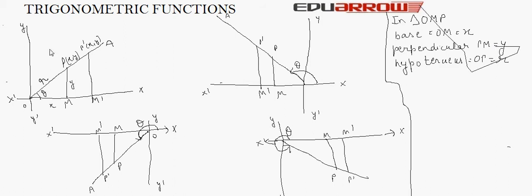Trigonometric functions are also known as circular functions. Let us have a look at these four graphs. First we will see this graph — there is a graph having x and y axes, and we have an angle over here that is angle xOA, which is defined as theta. There is a point on OA that is known as P.